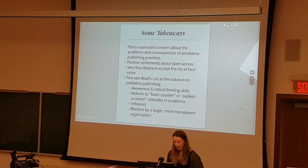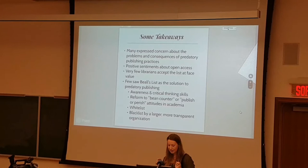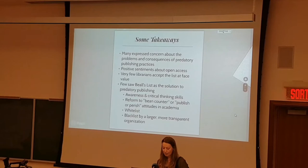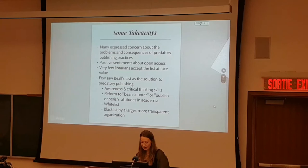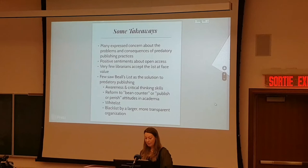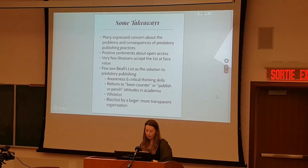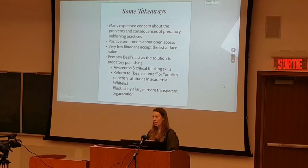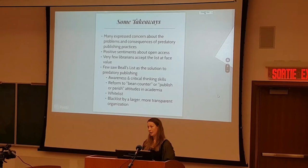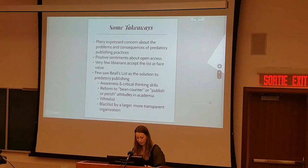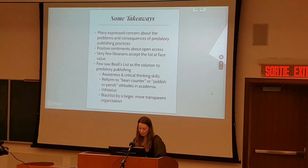Some mentioned they would prefer a whitelist of good quality open access journals, such as the DOAJ, with one respondent writing: 'I prefer the approach taken by DOAJ — a team of scholars working together to include good journals using transparent practices.' Others said they would like a blacklist, but maintained by a larger, more transparent organization: 'It would be nice if a larger body took this on, gave it some legitimacy, and could promote its use and increase its reputation.'